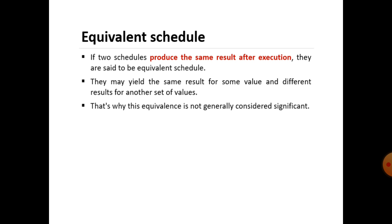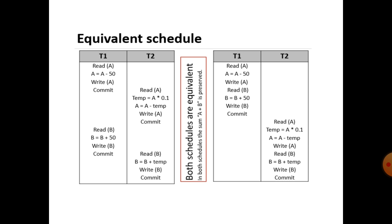The third type is an Equivalent Schedule: if two schedules produce the same result after execution, they are said to be equivalent schedules. However, they may yield the same result for some values and different results for another set of values, which is why this equivalence is not generally considered significant.